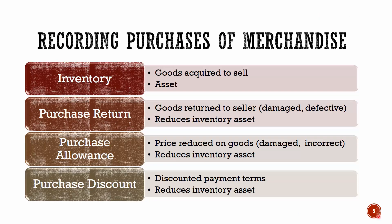To review: inventory is an asset — the goods you're acquiring to sell at a later point in time. Purchase returns and purchase allowances both result in a reduction to that inventory asset at the time of the return or allowance. And if you have a purchase discount for paying within the discounted payment terms, that also reduces the inventory asset. So all of these transactions impact that asset of inventory.